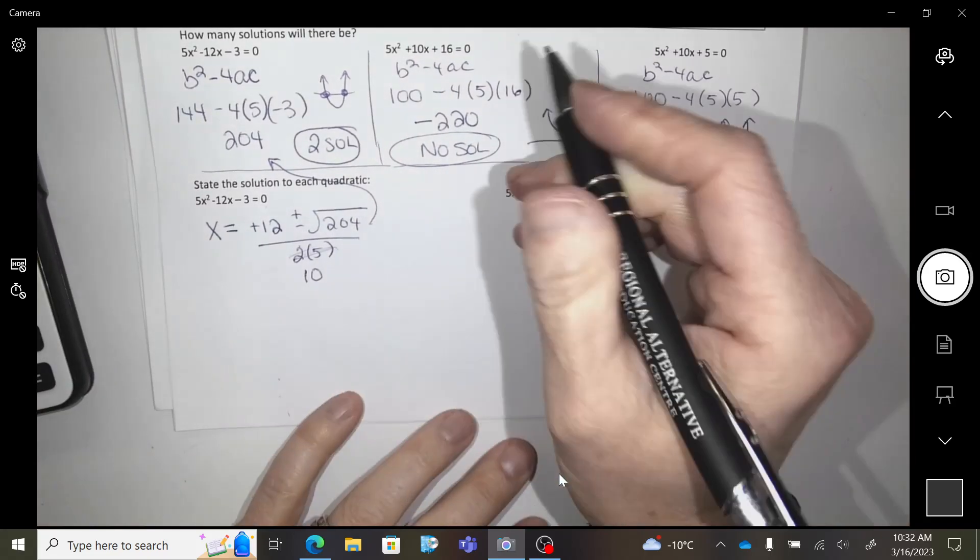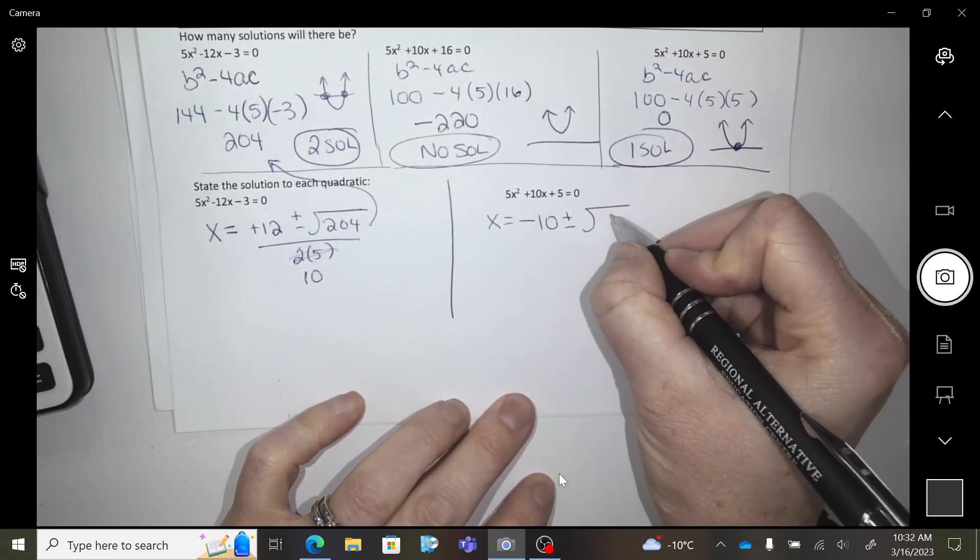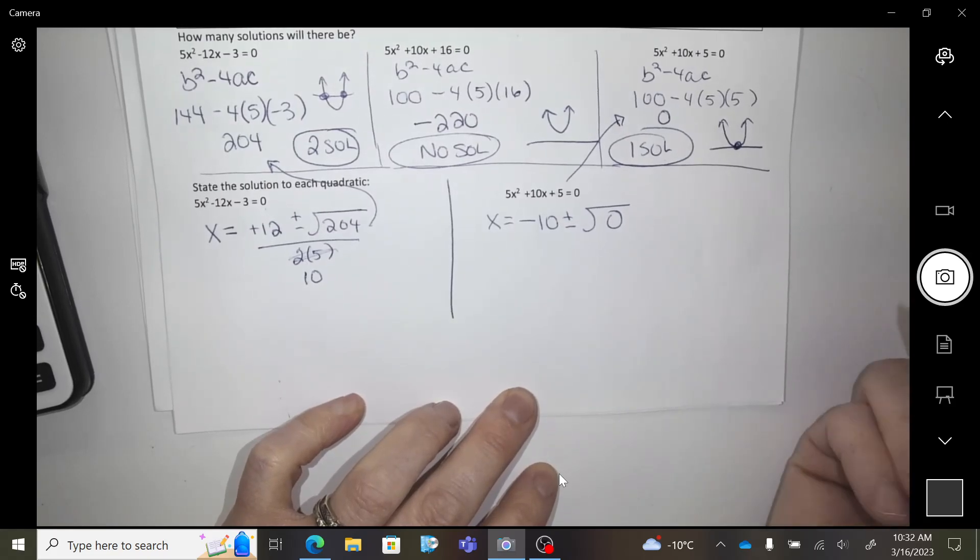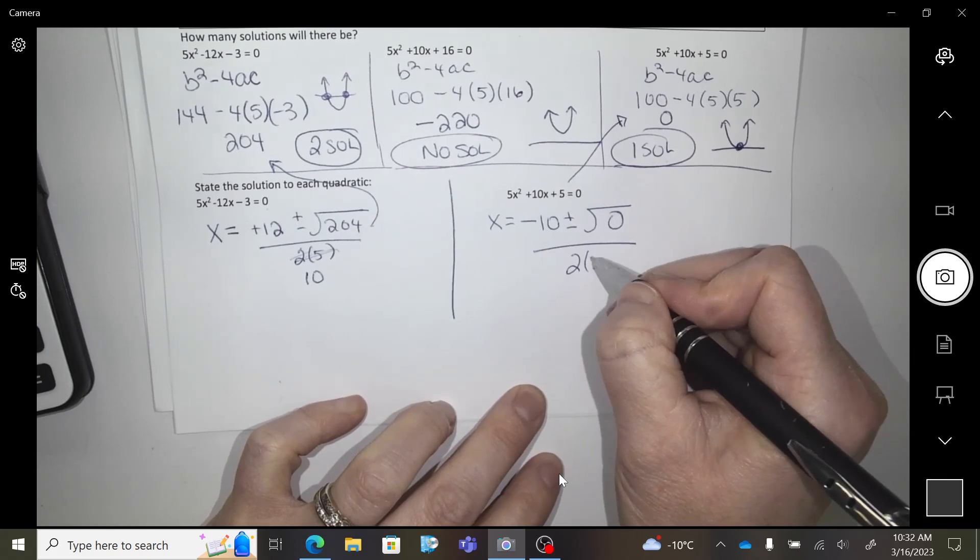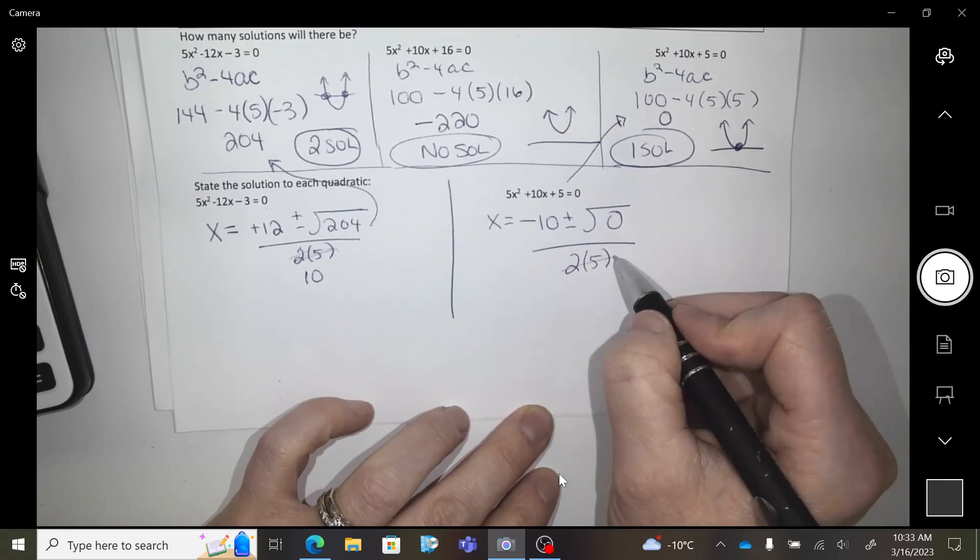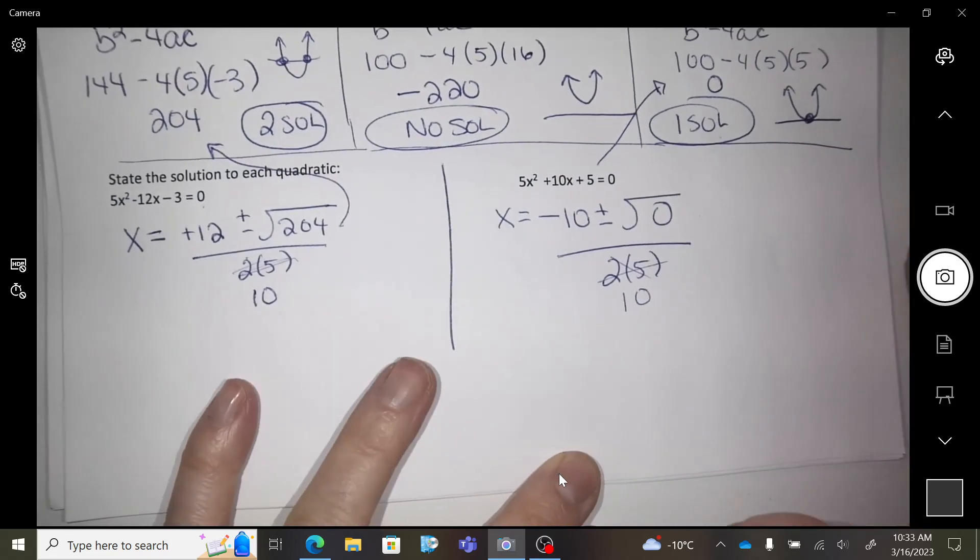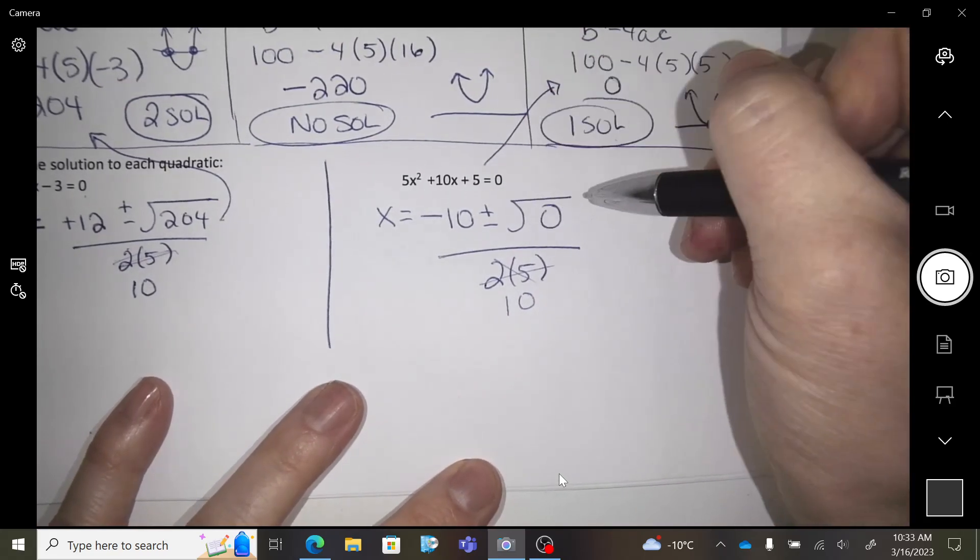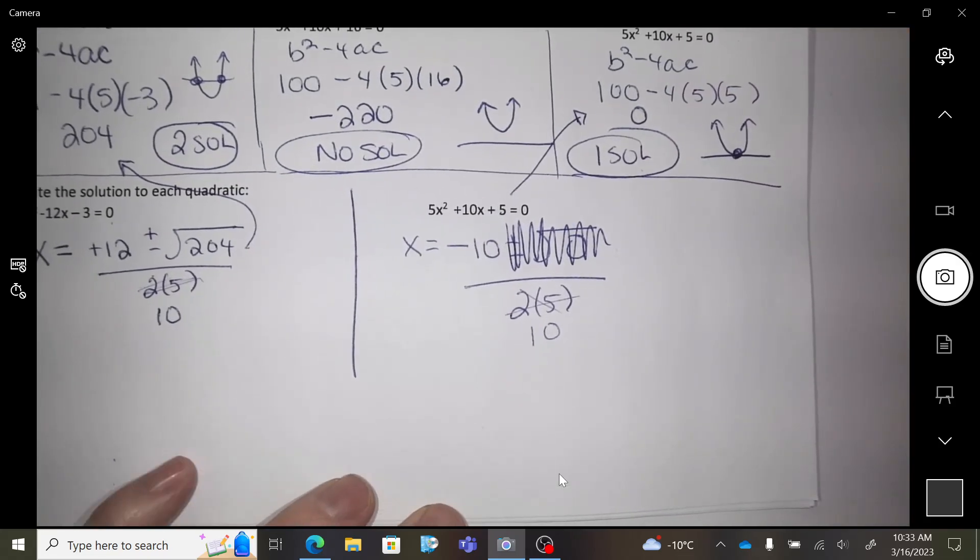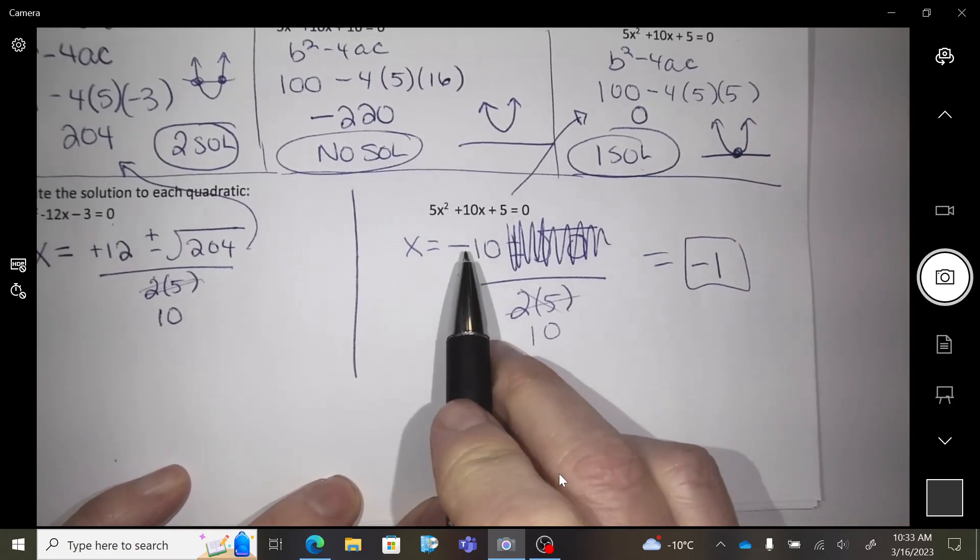Okay, the next one. So this would be x equals opposite b, so negative 10 plus or minus the square root of 0. Because I've already done that work, right? So we're going to copy that number down. Over 2 times 5. 2 times 5 is really a 10. Okay, technically this is what I would do. Plus or minus the square root of 0, look at what I would do to it. Forget it. It's not going to do anything mathematically. So what is the 1 x-intercept answer? Negative 1. Negative 1 is negative 10 divided by 10.